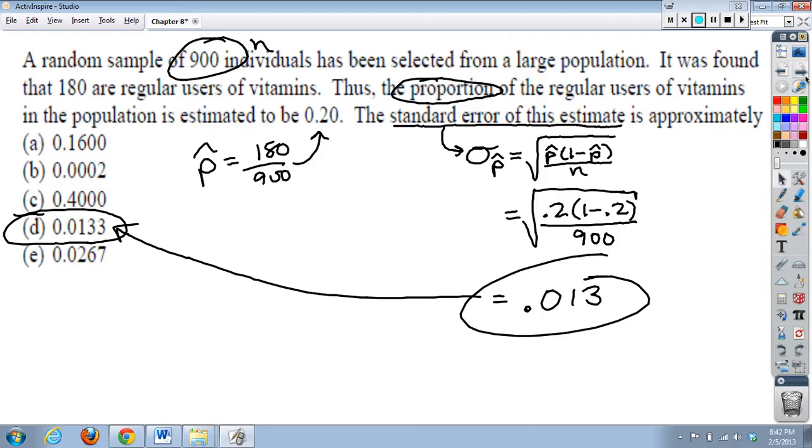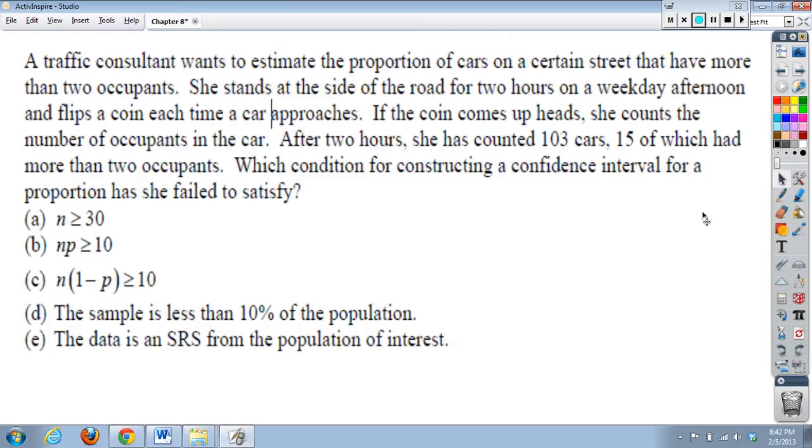Next up on our list, a traffic consultant wants to estimate the proportion of cars on a certain street that have more than two occupants. She stands at the side of the road for two hours on a weekday afternoon and flips a coin each time a car approaches. If the coin comes up heads, she counts the number of occupants in the car. After two hours, she has counted 103 cars, 15 of which had more than two occupants. Which condition for constructing a confidence interval for a proportion has she failed to satisfy?